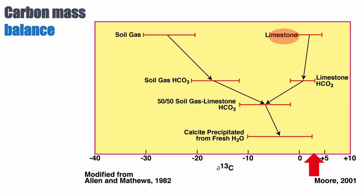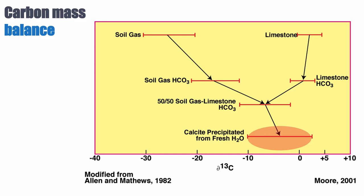The other source is the surrounding limestone, which can also dissolve. The limestone is slightly positive to zero because we express this in PDB, and PDB is a marine belemnite. If these two sources contribute to the bicarbonate pool of the fresh water in equal proportion, you obtain a composition that is intermediate in terms of carbon isotopes between the soil gas and the limestone. The cement precipitating from this will be somewhere between minus 10 and zero, and exactly how much soil carbon versus limestone carbon is incorporated will play a large role in the final delta C13 value.